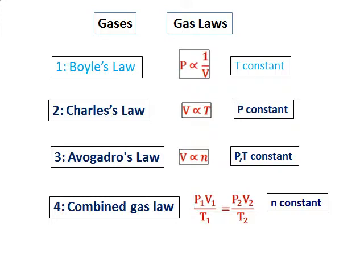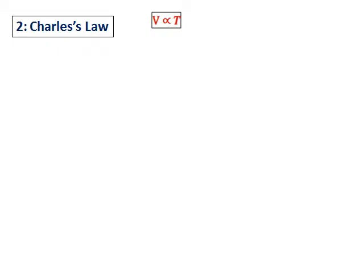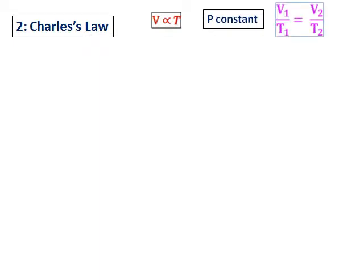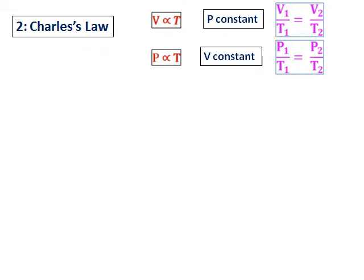If we also include Avogadro's law, the full combined gas law becomes P1V1/N1T1 = P2V2/N2T2, combining all three laws. To revise Charles law: volume is directly proportional to temperature at constant pressure, written as V1/T1 = V2/T2. It can also be expressed in terms of pressure and temperature at constant volume: P1/T1 = P2/T2.